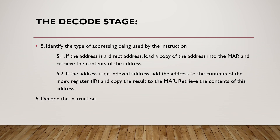The second part is the Decode stage. We need to identify the type of addressing being used by the instruction. If the address is a direct address, we load a copy of the address into MAR and retrieve the content of that address. If the address is an index address, we add the address to the content of the Index Register, copy the result to MAR, and retrieve the content of this address. After this, we decode the instruction.